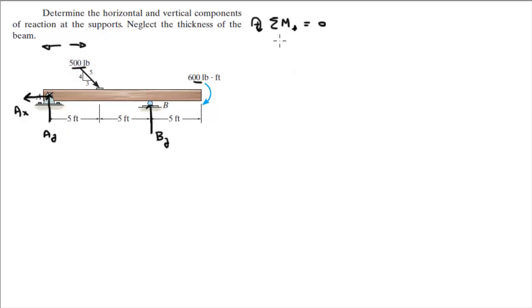So sum of the moments at A is equal to 0 and it is equal to the 600 foot pound moment right here, 600 foot pounds.